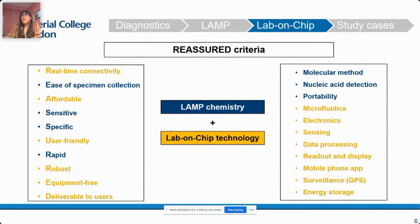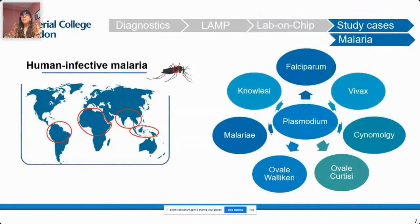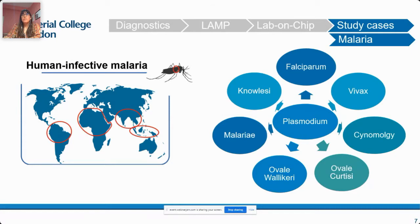I would like to present a study case: the application for diagnostics of human malaria. As previously mentioned, malaria is one of the most threatening infectious diseases — a mosquito-borne disease caused by Plasmodium pathogens, with several human-infective species. The most dangerous and commonly found is Plasmodium falciparum. Nevertheless, it is also important to diagnose non-falciparum malaria, which is currently misdiagnosed due to the lack of tests, and therefore cases are underestimated.